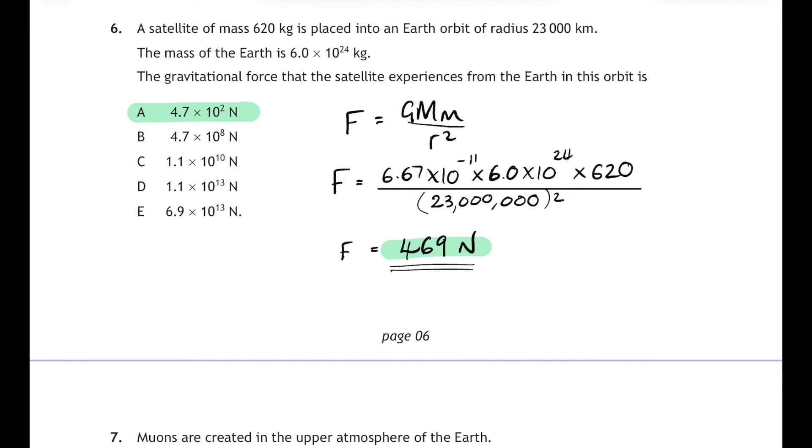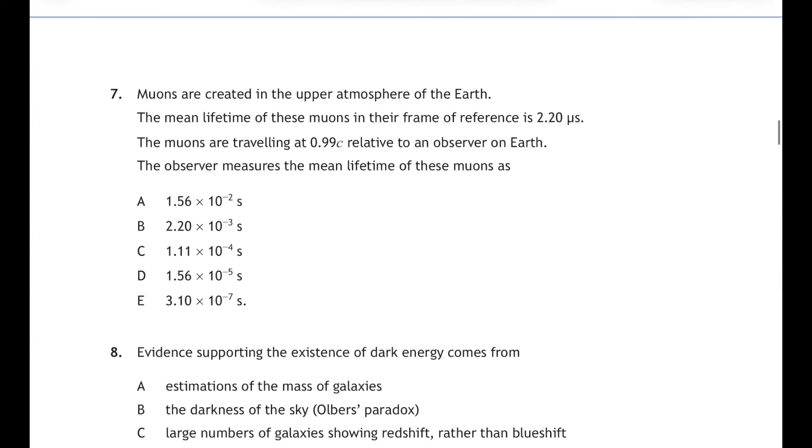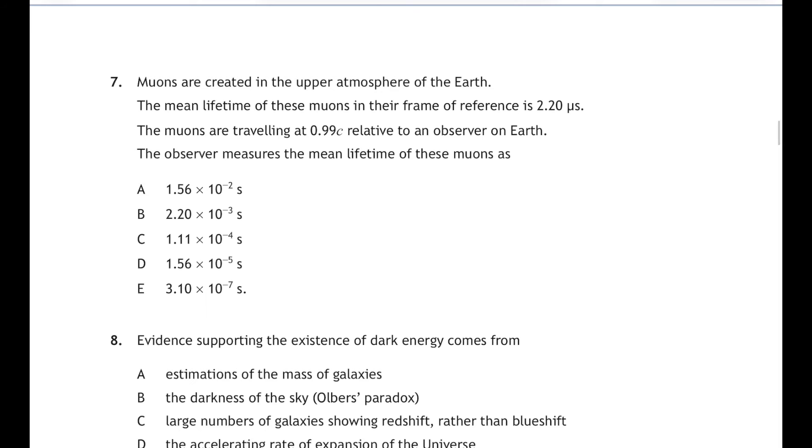Question 7. Muons are created in the upper atmosphere of the earth and the mean lifetime of these muons in their frame of reference is 2.20 microseconds. And these muons are traveling at 0.99 c, that's 0.99 times the speed of light, relative to an observer on earth. So the observer measures the mean lifetime of these muons to be...